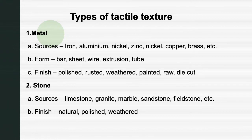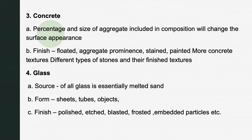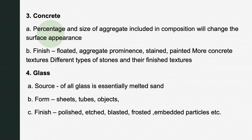Stone: there are different types of stone such as limestone, granite, marble, sandstone, and fieldstone. These stones are used in natural form, polished, or weathered. Concrete: concrete is available in different sizes, and because of the size it creates a different type of surface. The percentage and size of aggregate included in the composition will change the surface appearance. Finished looks include floated, aggregated, prominent, stained, and painted. A common example of concrete and stone use is mural paintings — paintings on walls or on big slabs of stone.